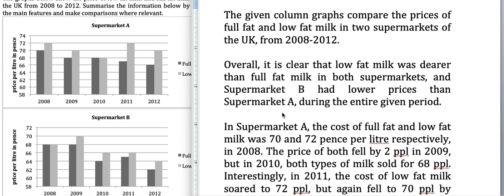In Supermarket A, the cost of full-fat milk and low-fat milk was 70 and 72 pence per liter respectively in 2008. The word 'respectively' shows that the first figure is for full-fat milk and the second is for low-fat milk — 70 and 72 pence per liter. Note that the units 'pence per liter' are written in full here.